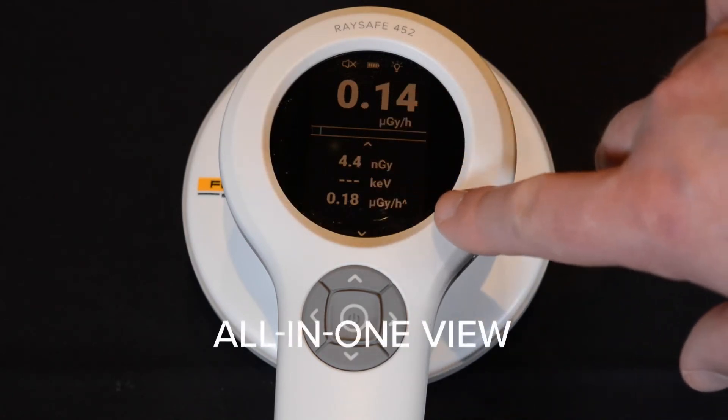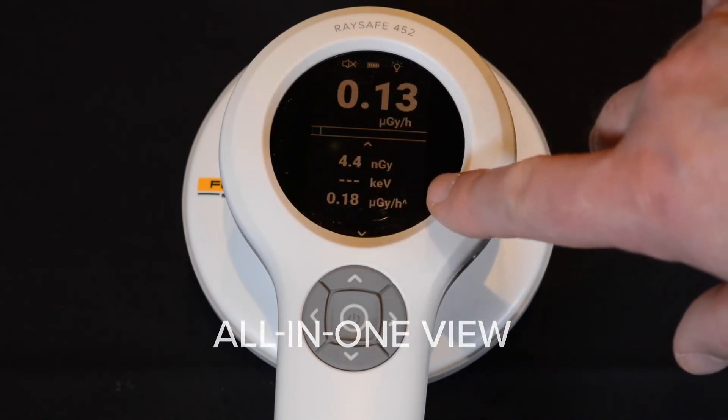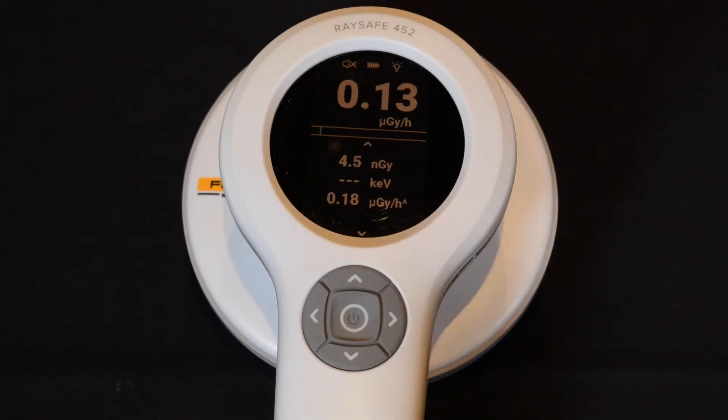When using other instruments, you might have several modes, but with the 452 you have everything all in one. There is no need to select anything. It's all automatic.